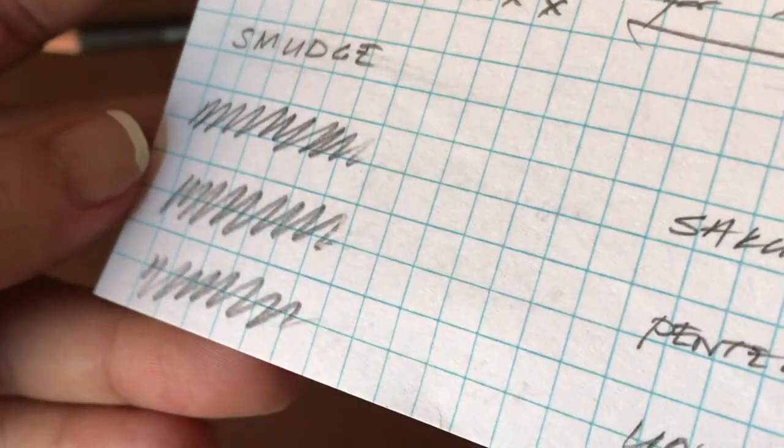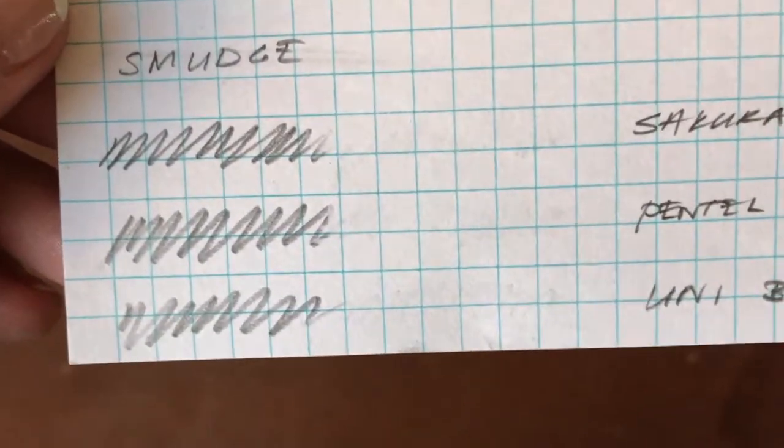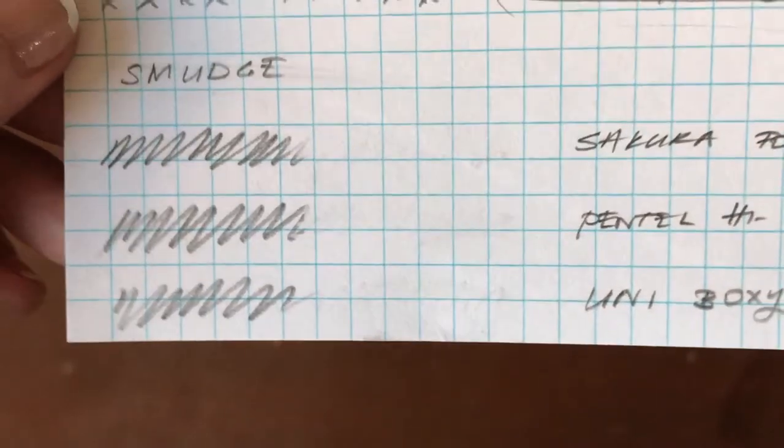There is almost no residual left. Especially with the Uni Boxy. Look at that at the bottom. Awesome. But for all intents and purposes, the graphite is a pretty nice erase.